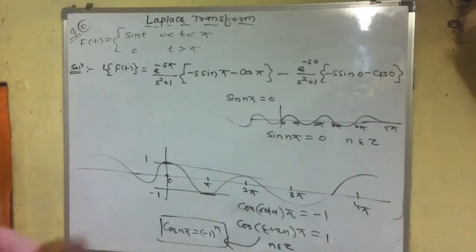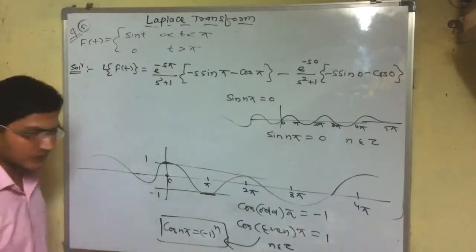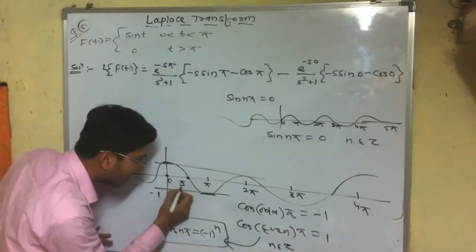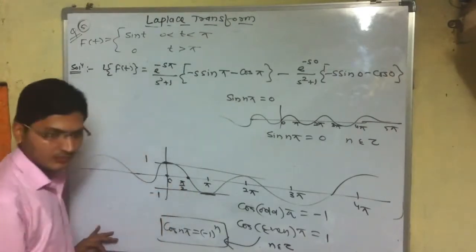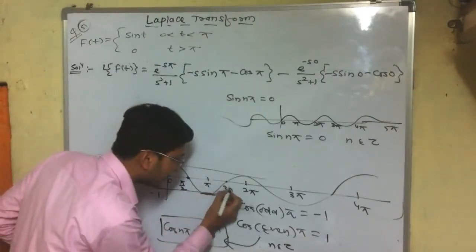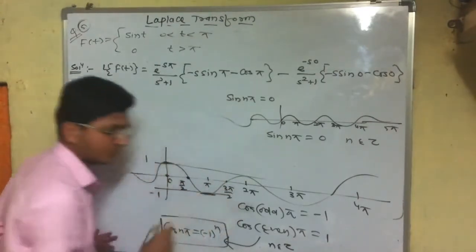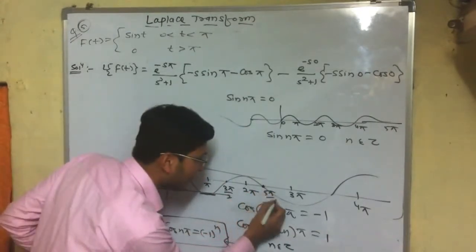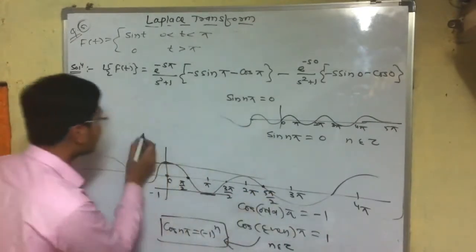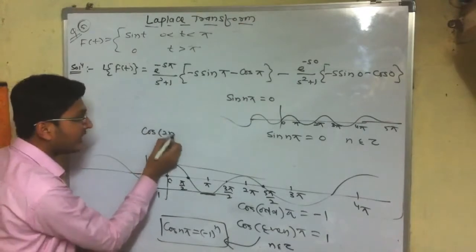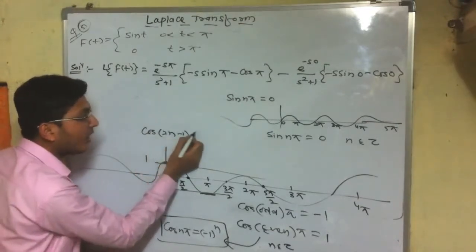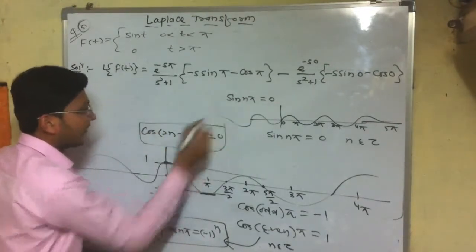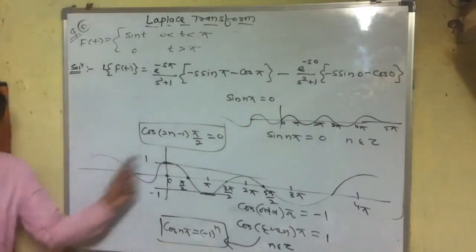For cosine, it becomes zero at odd multiples of π/2: that is π/2, 3π/2, 5π/2, and so on. In other words, cosine equals zero at every odd multiple of π/2. Note all these results.